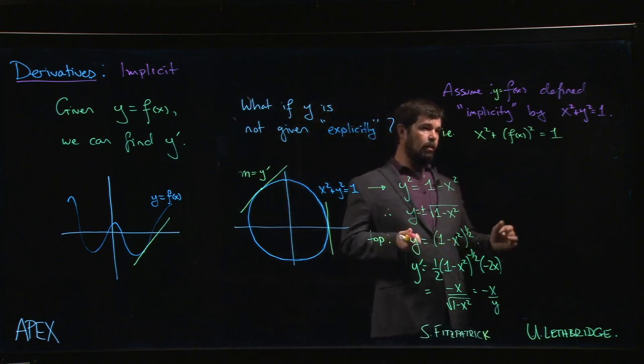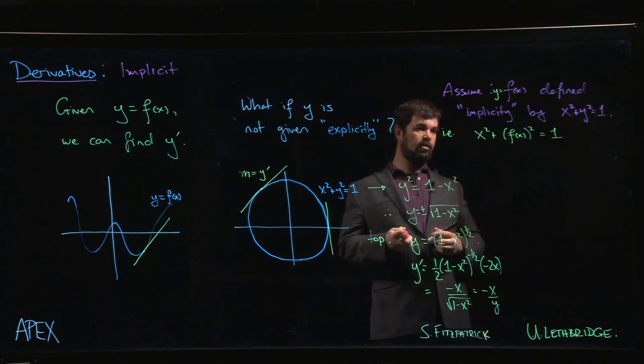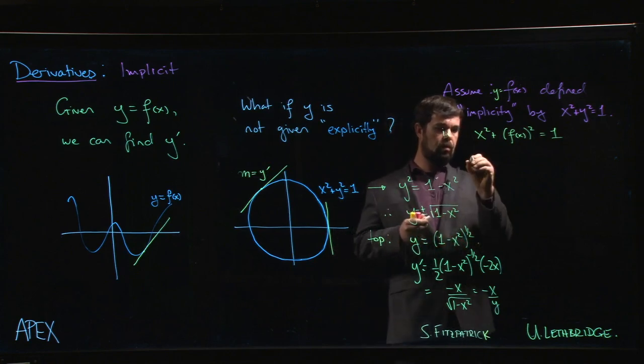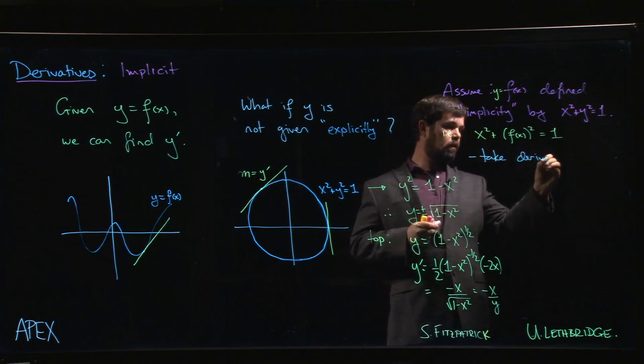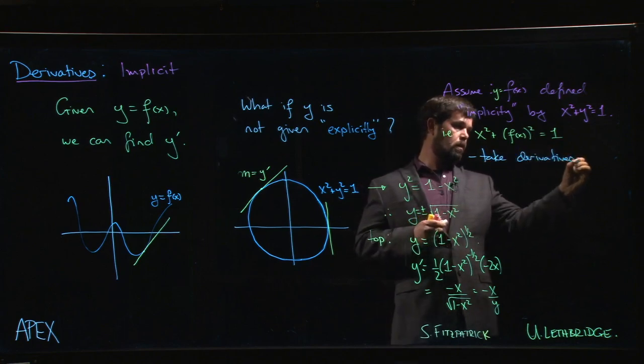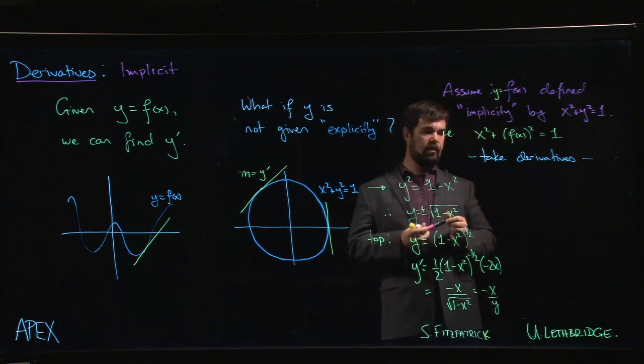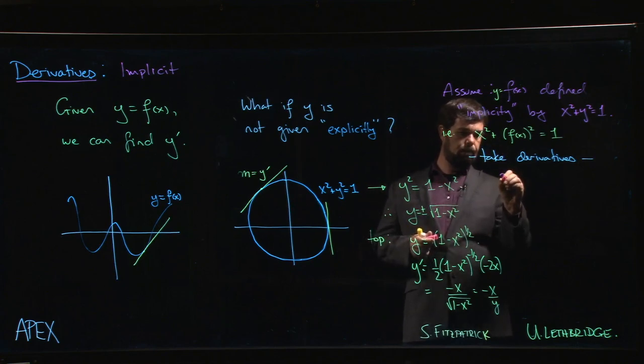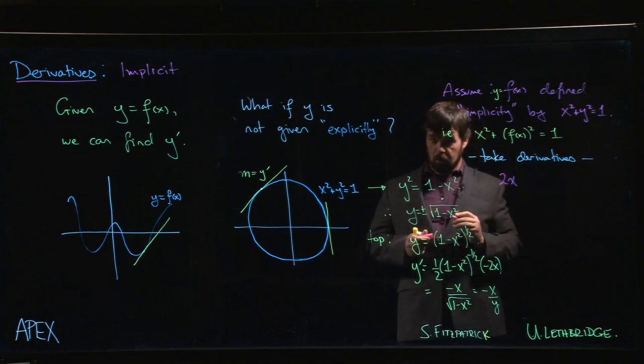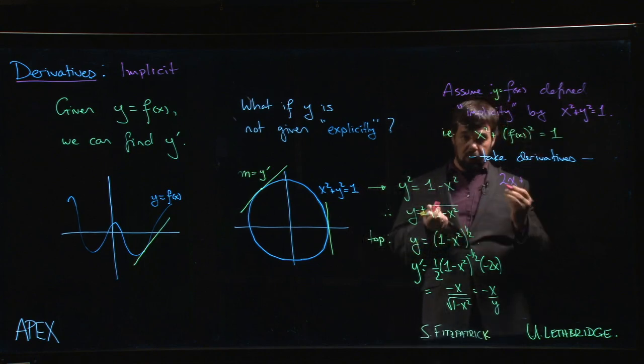Now that we've made that assumption, let's just try taking derivatives of both sides of the equation. So we're going to take derivatives. What happens when we take derivatives? Well the derivative of x squared is 2x. The derivative of f of x squared, here we need to use the chain rule.